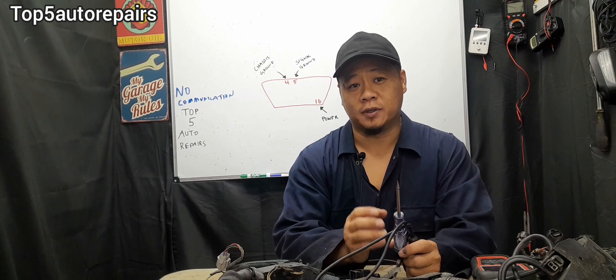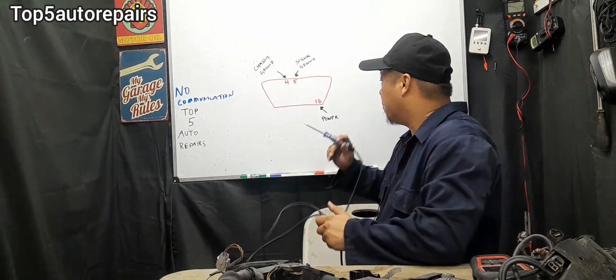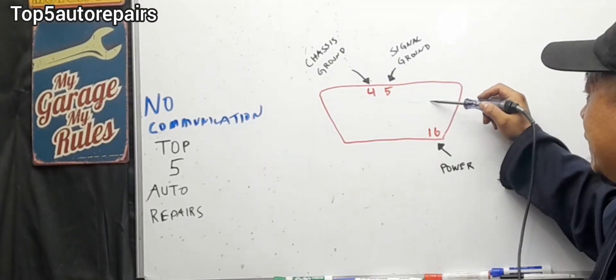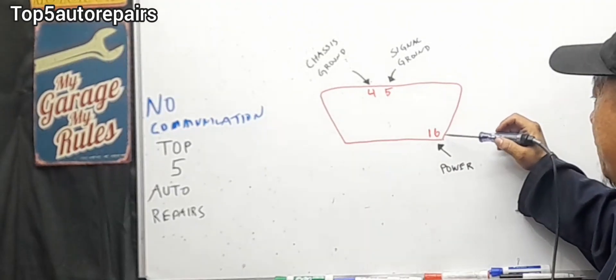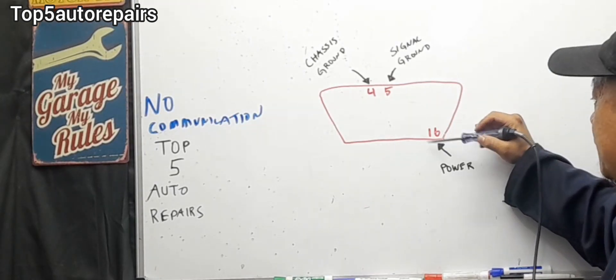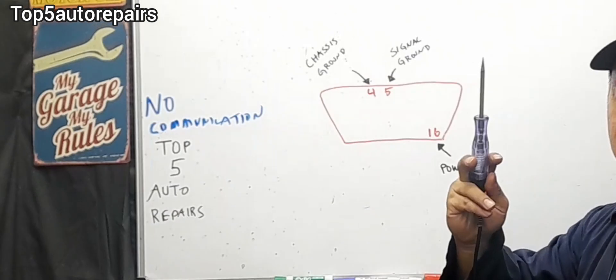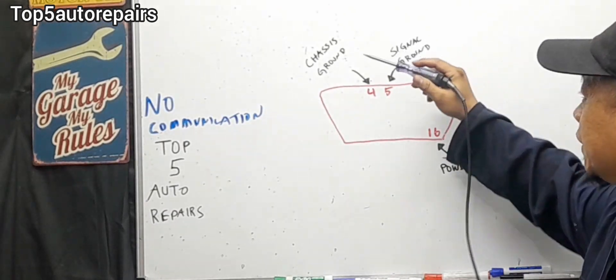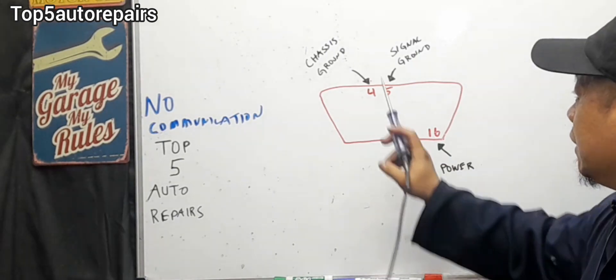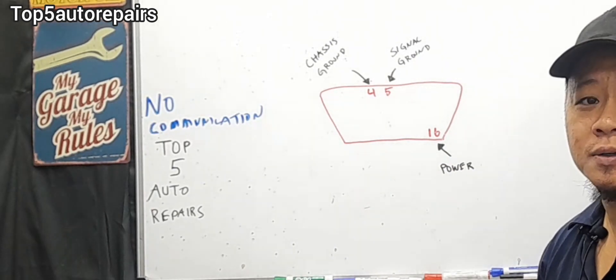If the fuse is not blown, the next thing you want to do is check for power right at the data link connector. You want to check for power at pin number 16 using a test light, and also check the signal and chassis ground as well.